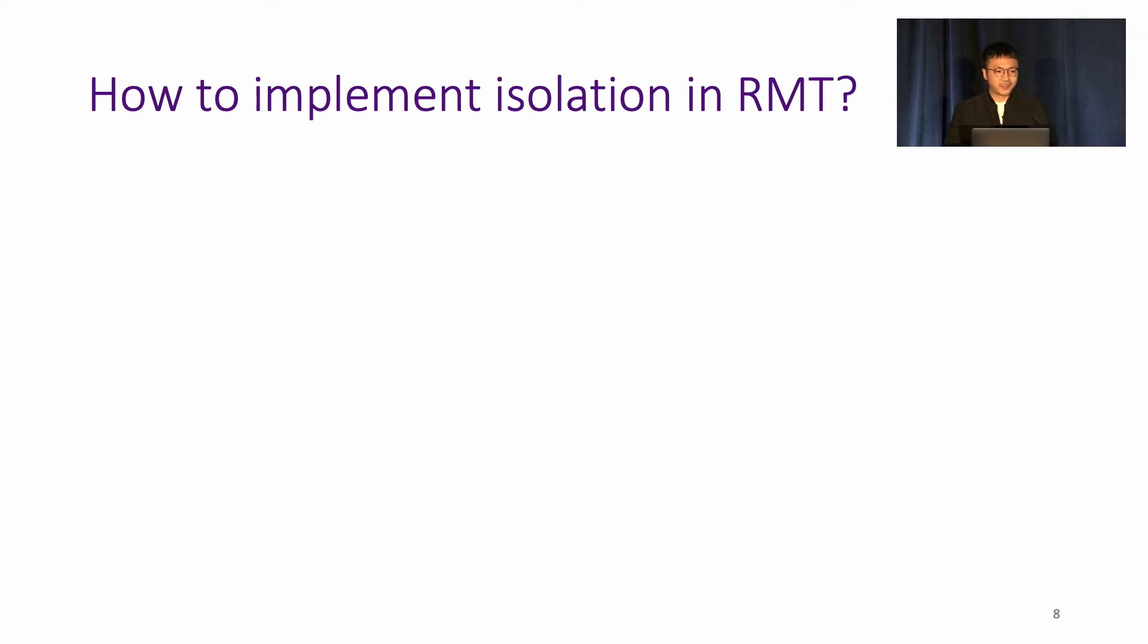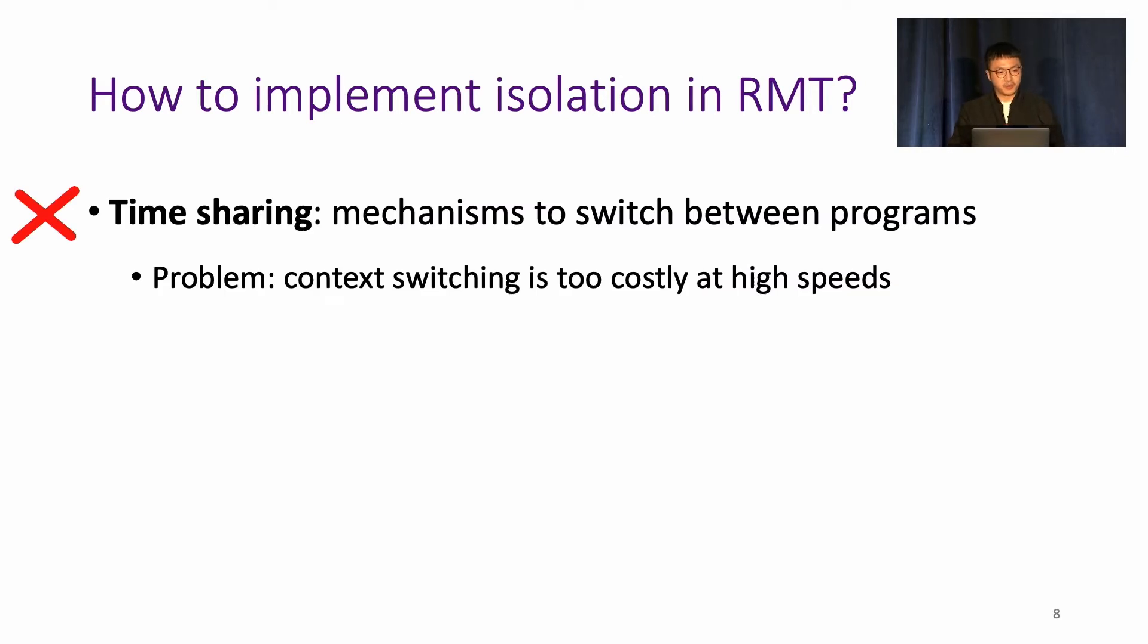So how to implement isolation in RMT? There are maybe two natural ways to do so. The first choice is that maybe we can enforce time-sharing, which implements mechanism to switch between programs. But the problem is that it may be infeasible to restore and save context at gigabit or terabit per second rate. You only get several nanoseconds to do the context switching.